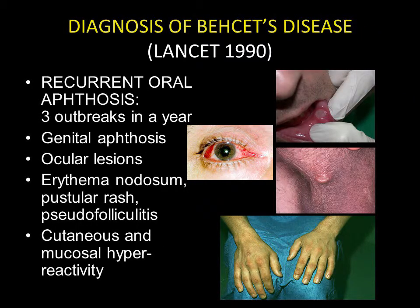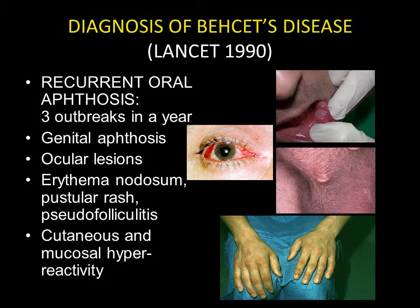The diagnosis of Behçet disease is one to bear in mind, even if this disease remains rare. The diagnosis will be based on the presence of oral aphthae with at least three outbreaks per year, more or less accompanied by genital aphthosis, ocular lesions in the form of uveitis, and cutaneous lesions in the form of erythema nodosum or a pseudofolliculitis pustular rash. A pathergy test can be applied; in Behçet disease, it will be positive in most cases.